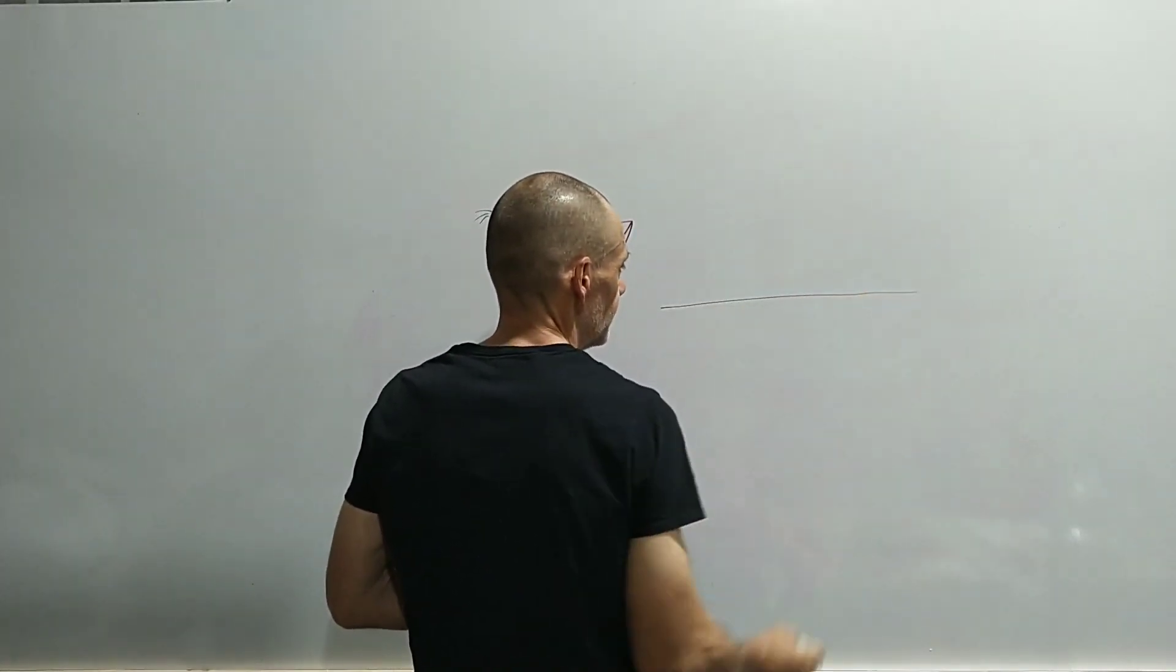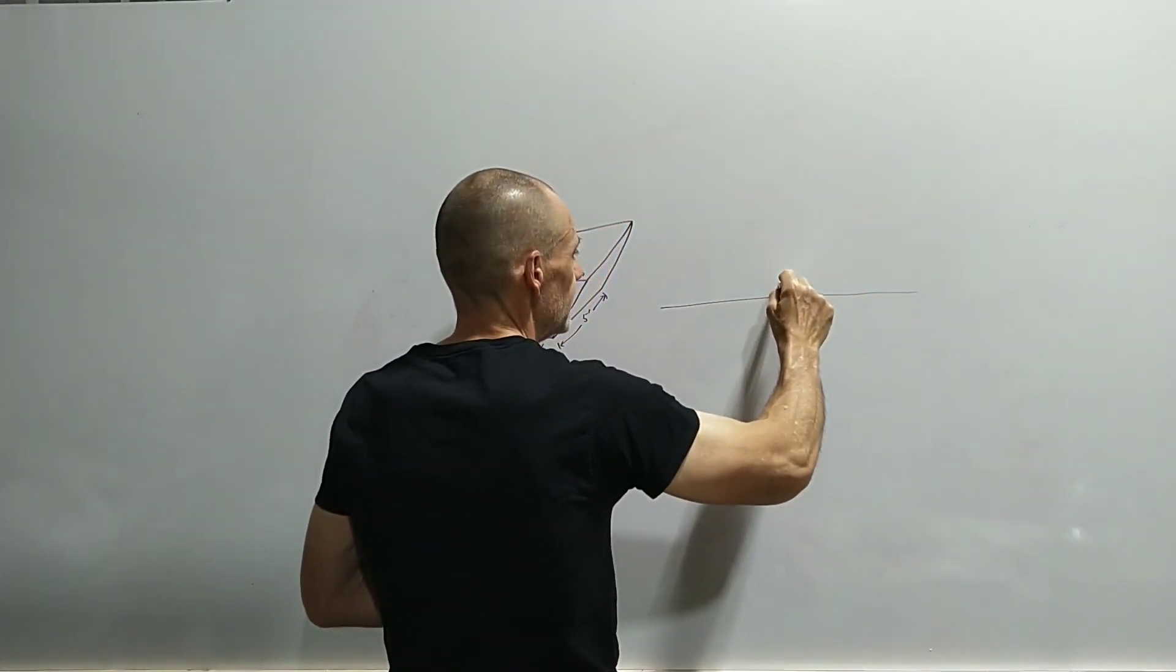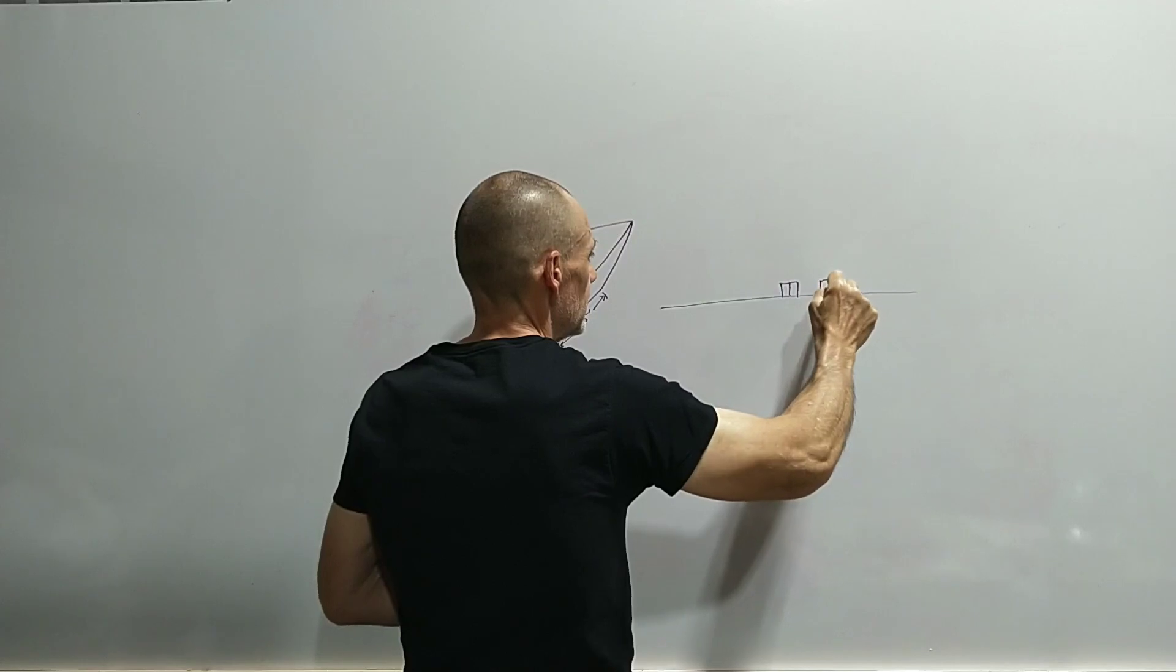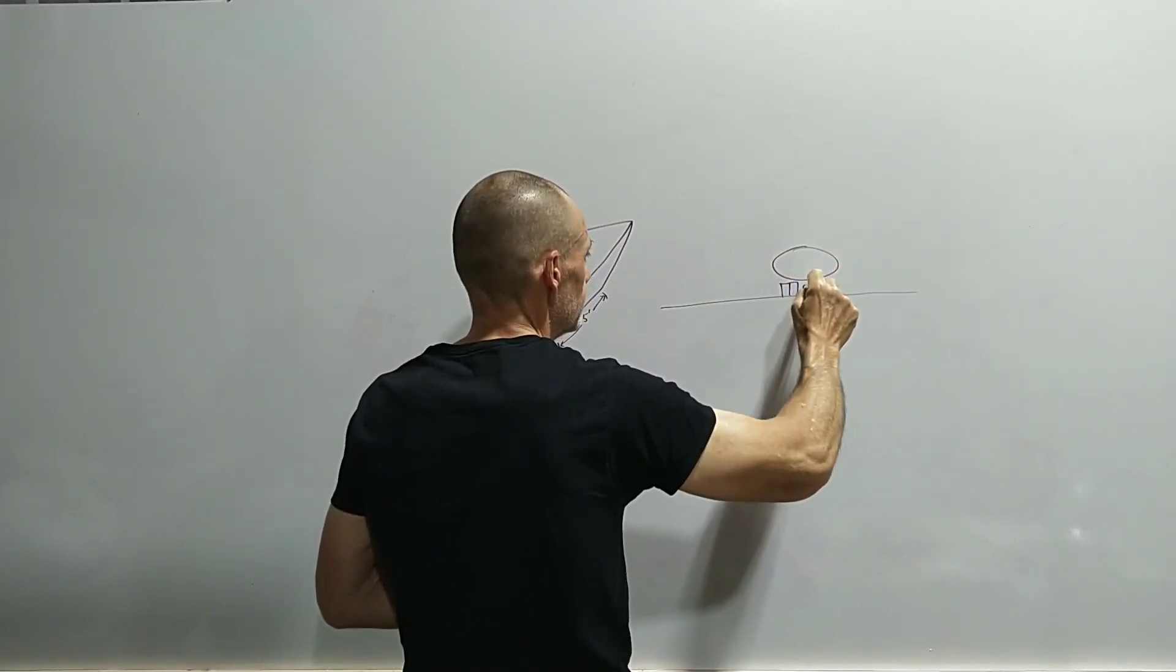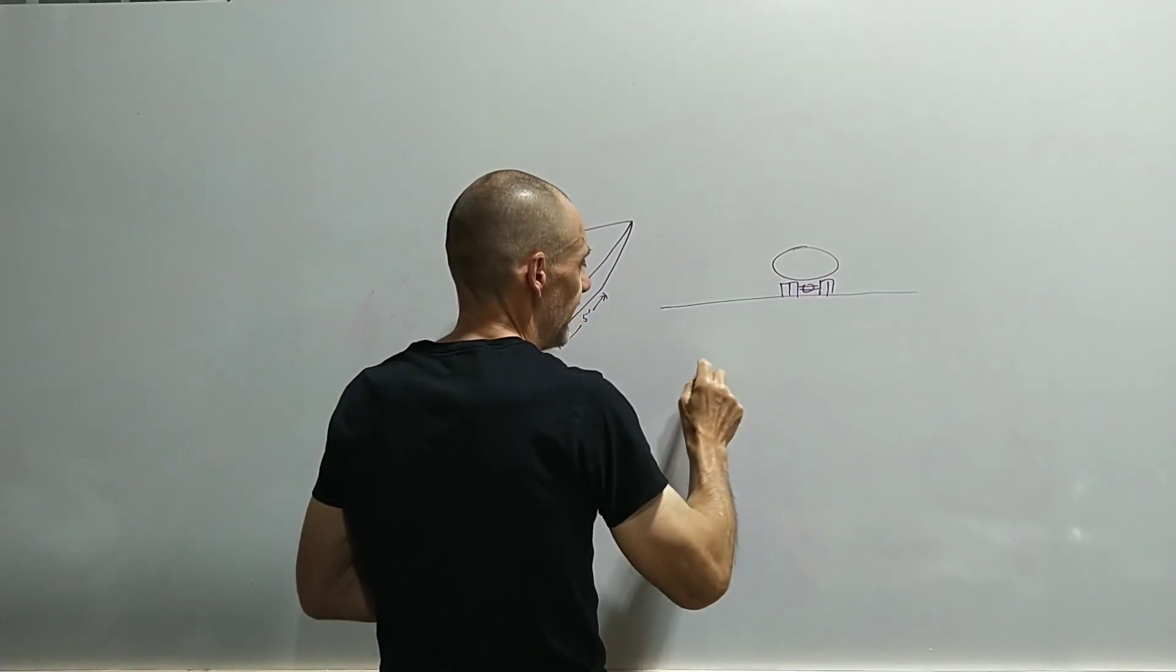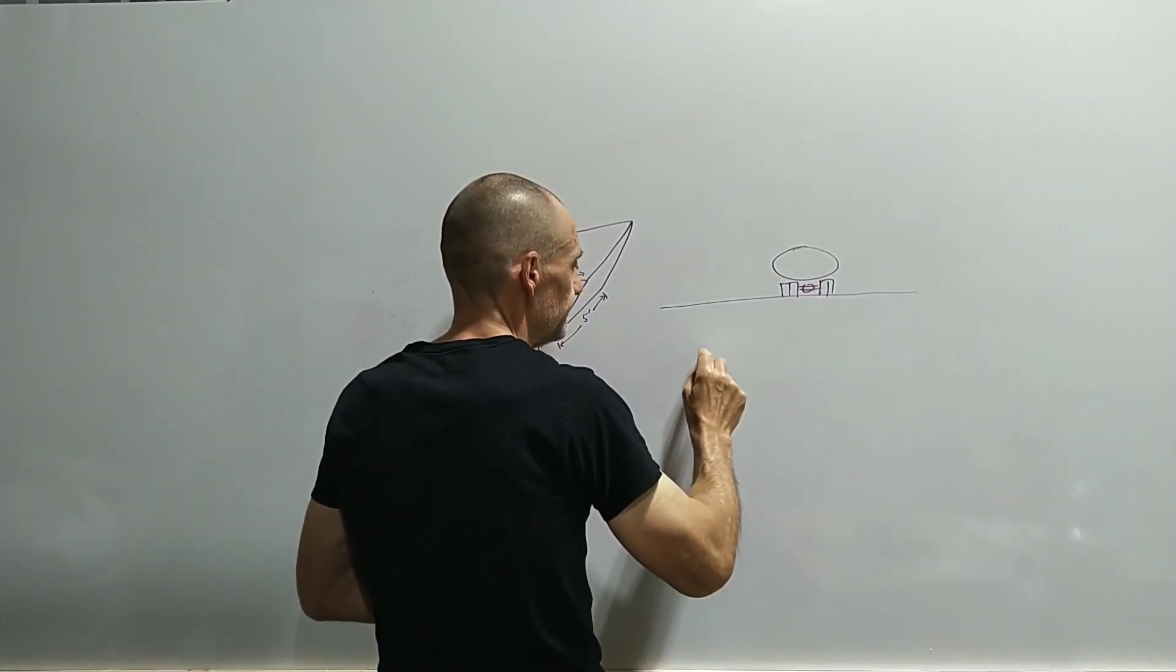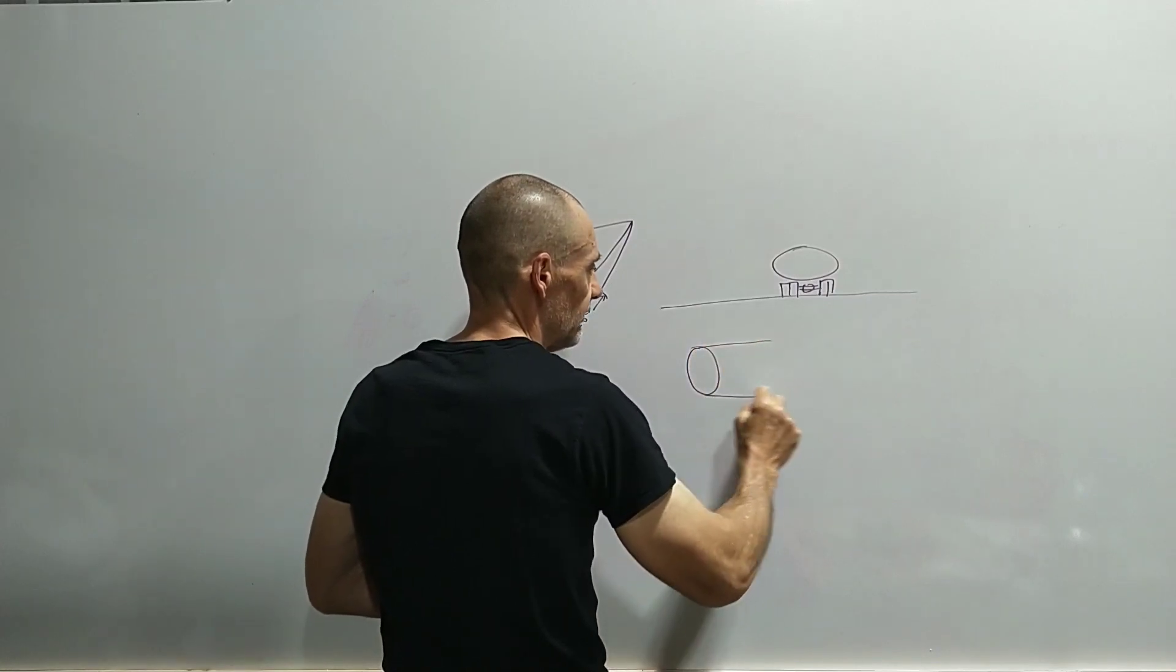We have the ground level here. Let's say we have one of these semis here, and we have a tank underground. Let's say that this tank is in the form of a right circular cylinder.